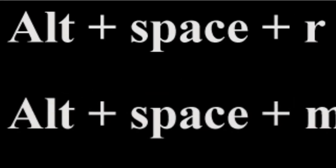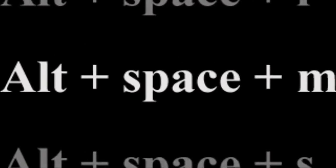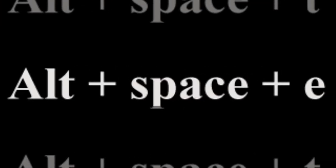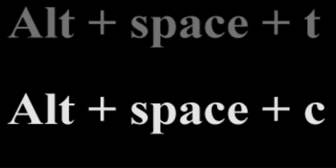In summary: to restore the current window, press alternate space arrow. To move the current window, press alternate space N. To resize the current window, press alternate space S. To minimize the current window, press alternate space N. To maximize the current window, press alternate space X. To open a new tab and jump to it, press alternate space T. To reopen a closed tab, press alternate space E. To open Task Manager, press alternate space T. To close the current window, press alternate space C. Thank you for watching.